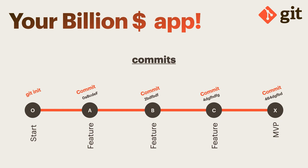The benefit of these commits is that from any point in your application — say when you've created the MVP at checkpoint X — you can go back in time and look at the code that existed when you added feature A, B, or C. If you want to delete a feature, you can do it very easily without manually removing that code; it is automatically handled. The orange line you see here is called the master branch, and we'll talk more about branches in the next slide.